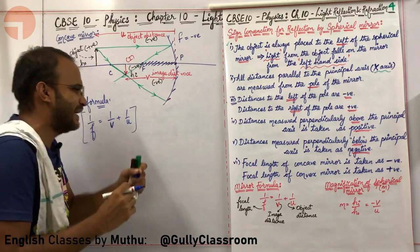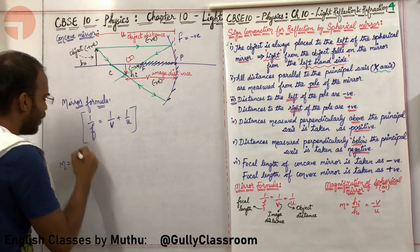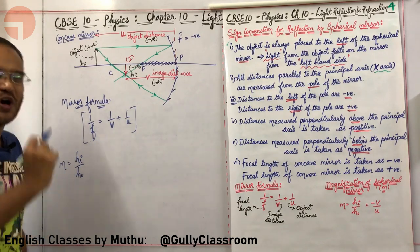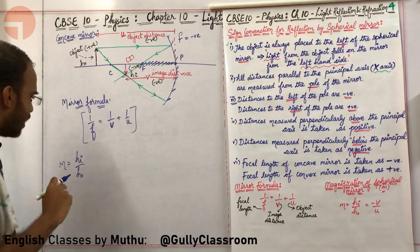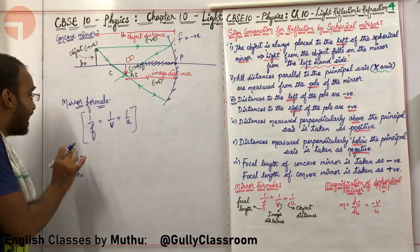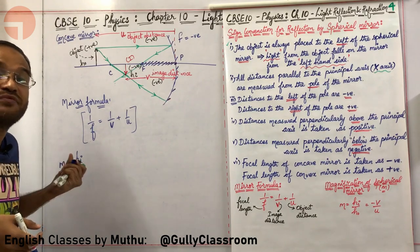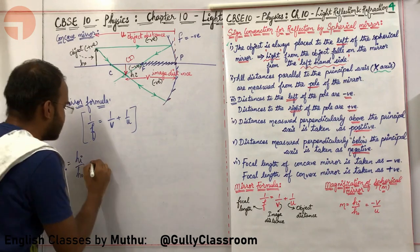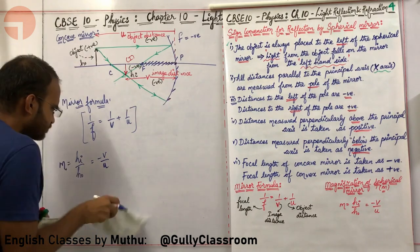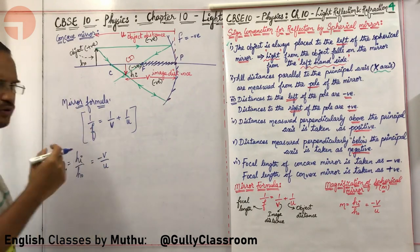Magnification for mirrors is written as hi/ho — height of the image divided by height of the object. This compares the height of the image with respect to the height of the object. This can also be derived as minus V divided by U, so magnification m = hi/ho = −v/u.